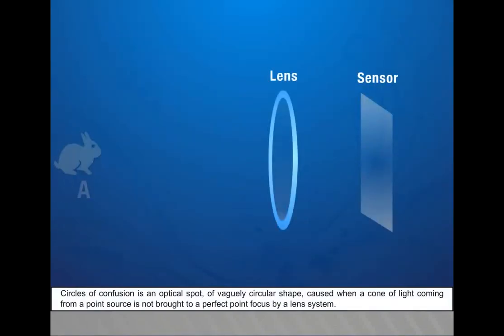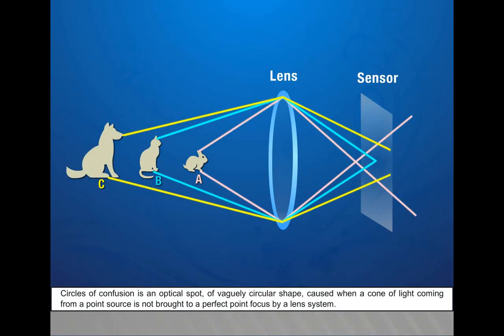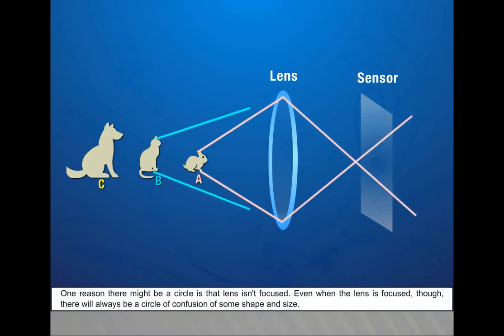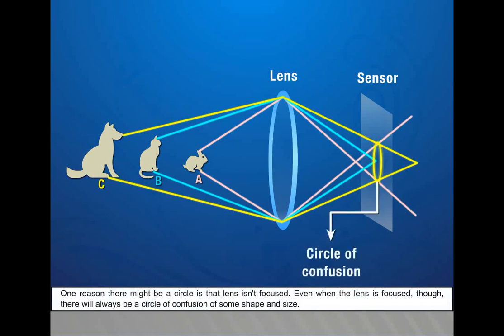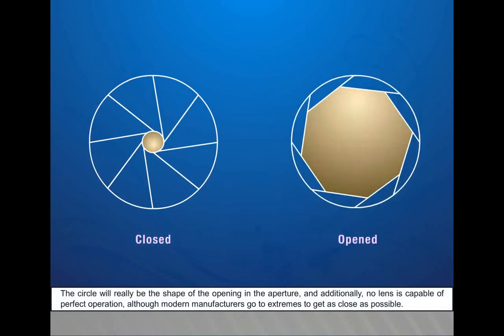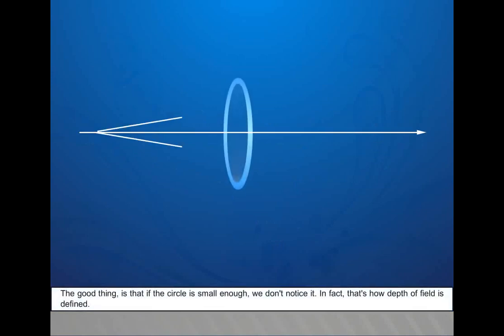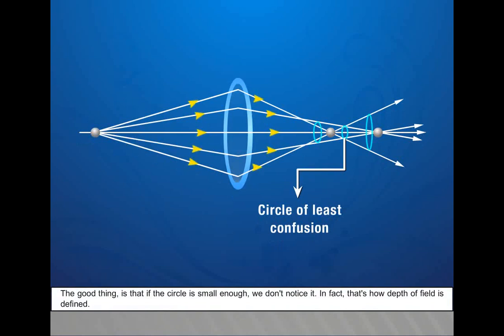Circle of confusion is an optical spot of vaguely circular shape caused when a cone of light coming from a point source is not brought to a perfect point focus by a lens system. One reason there might be a circle is that the lens is not focused. Even when the lens is focused though, there will always be a circle of confusion of some shape and size. The circle will really be the shape of the opening in the aperture, and additionally, no lens is capable of perfect operation, although modern manufacturers go to extremes to get as close as possible. The best a lens can do is called the circle of least confusion. The good thing is that if the circle is small enough, we don't notice it. In fact, that's how depth of field is defined.